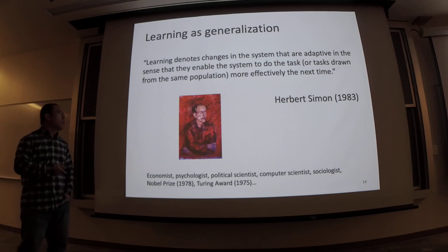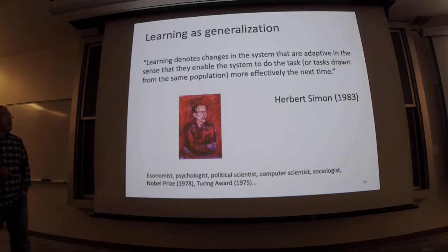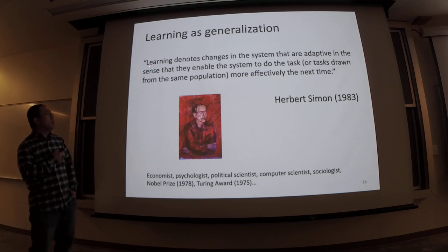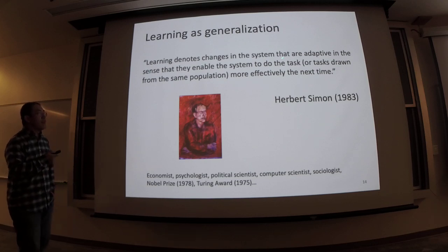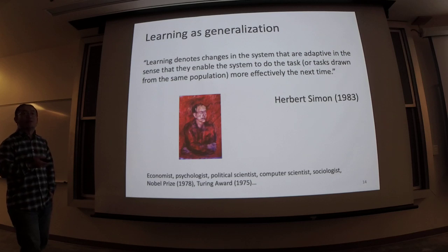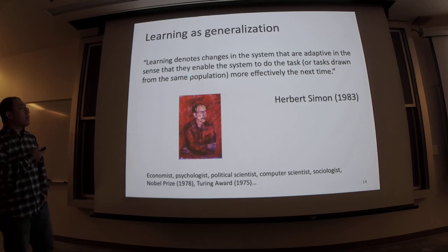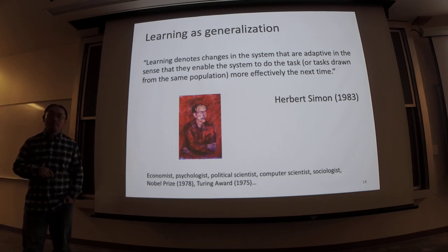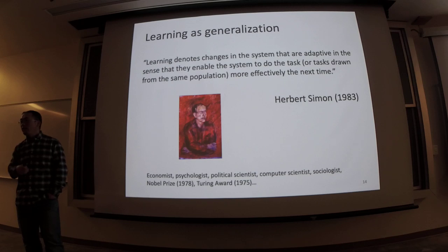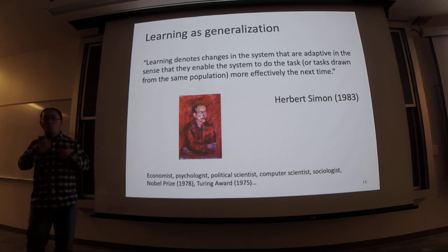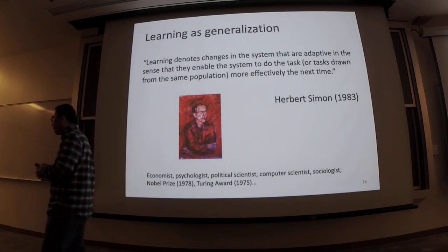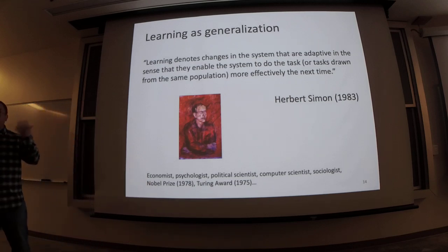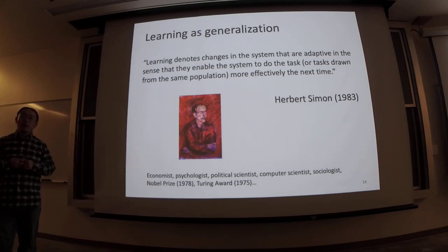Later, Herbert Simon in 1983 found that learning denotes changes in the system that are adaptive — in the sense that they enable the system to do tasks from the same population more effectively next time. Basically, it shows dynamic behavior: when you learn more and more information, you actually improve your capability of doing some special task.